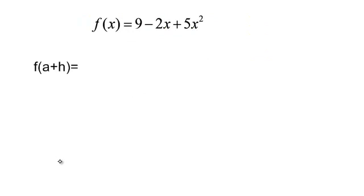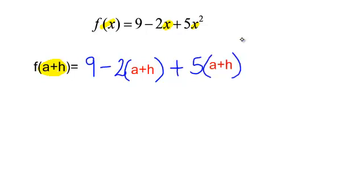I'm going to first work on finding f at a plus h. So, wherever I see x, I am now going to put a plus h. So, f at a plus h will be 9 minus 2 times a plus h. Make sure you put parentheses around that. Plus 5 times a plus h squared.